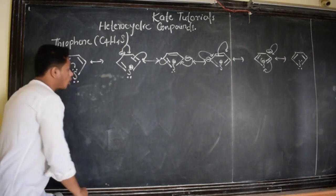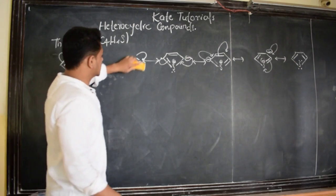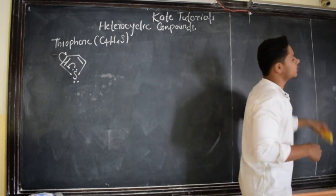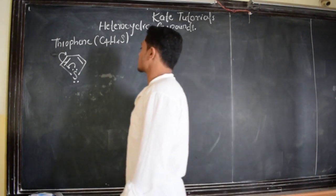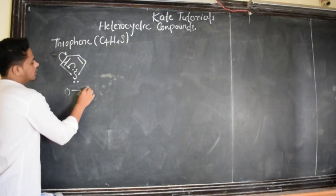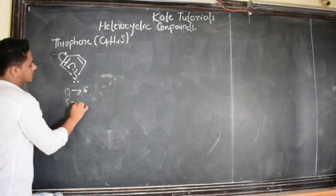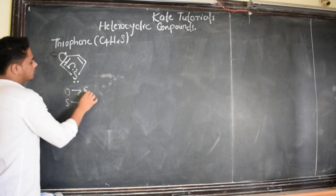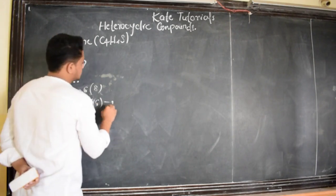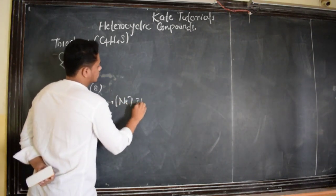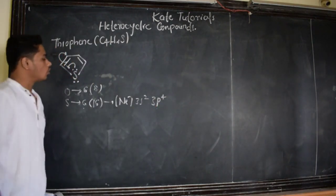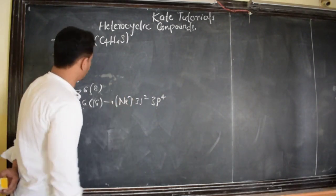Now we shall discuss about the orbital picture of thiophene. The structure for thiophene is C4H4S. We know that in furan the outermost electrons for oxygen are 6, and for sulfur they are also 6. But oxygen has atomic number 8 whereas sulfur has atomic number 16, so it is neon 3s2 3p4 — these are the outermost orbitals.